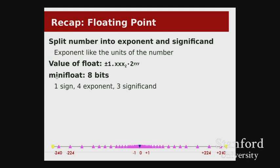A couple of details to cover. One thing I promised: how do we represent zero? With the formula '1.something × 2^y', there are no values of x and y that give you zero. We need a special case. Recall the mini float — a made-up 8-bit type with one sign bit, four exponent bits, and three significand bits. We reserved the all-zeros exponent for this special case.